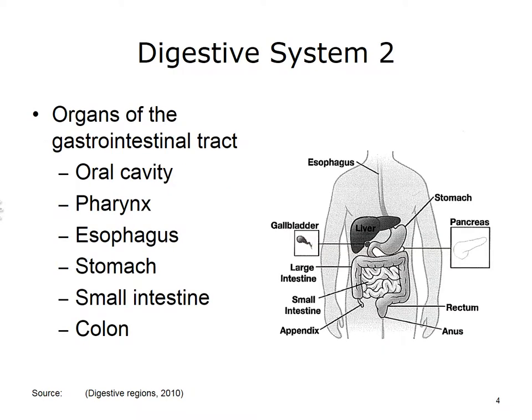On this slide, you will see a diagram of the digestive system. Let's take a look at the anatomy of this system. The gastrointestinal system begins at the mouth, continues through the thoracic cavity, and fills much of the abdominal-pelvic cavity. The upper gastrointestinal system includes the structures from the mouth through the stomach. The lower gastrointestinal system includes the structures from the small intestine through the anus.